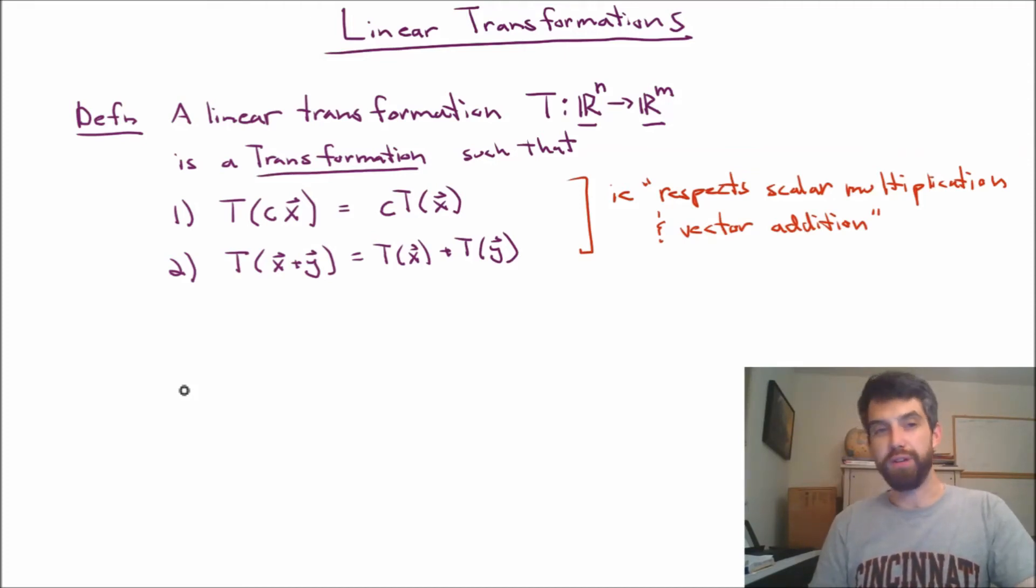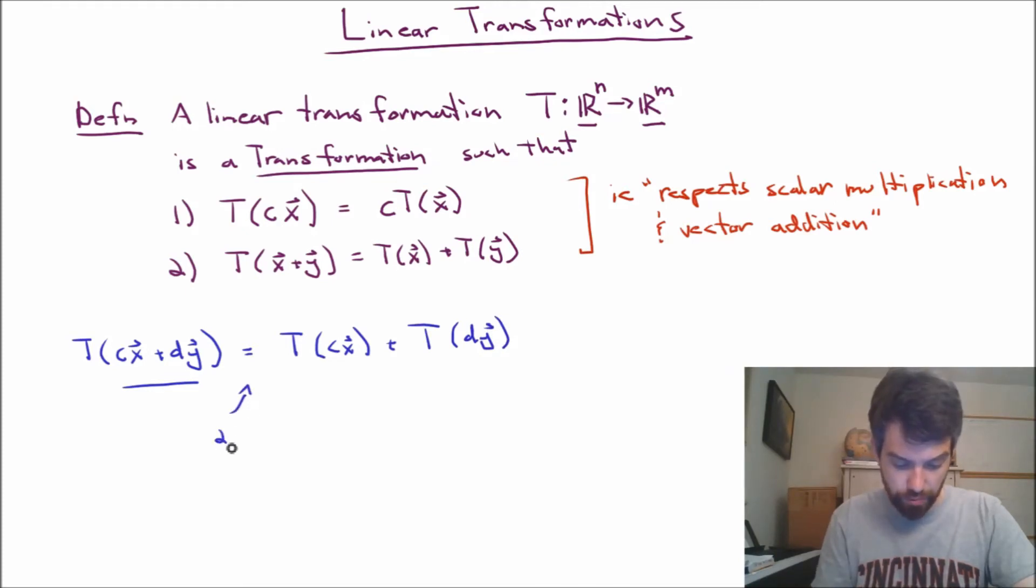There's actually a different and equivalent formulation. Namely, I take the transformation of cx plus dy. And what I have in the center here is sort of a generic linear combination of two different vectors. It's the sum of them, but each of the two have been stretched as well. And by the second rule, I can break this up as the sum of two different things, the transformation on cx plus the transformation on dy. So here I'm using rule two. And then both of these individual things I can break up using rule one and say that this is just going to be c times T(x) plus d times T(y).